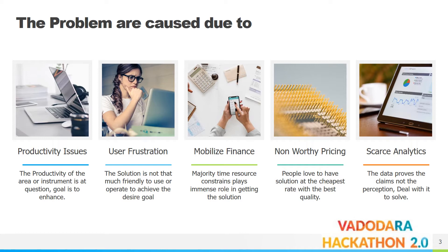User frustration means the solution is not friendly enough to use or operate to achieve the desired goal. Mobile finance means that resources are often constraints and play an immense role in getting solutions. Non-worthy pricing means people want solutions at the cheapest rate with the best quality. And the fifth one — sparse analytics — means data proves claims, not perception. These show the real problem: why the problem exists, where it exists, and how we need to deal with it.